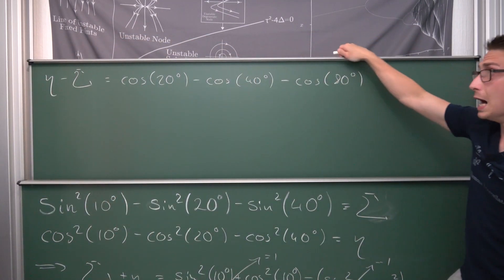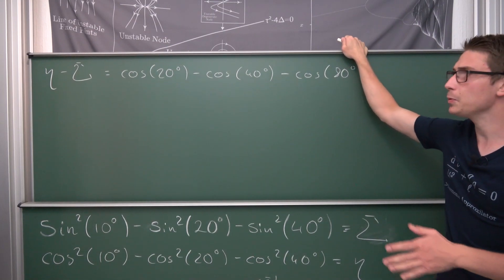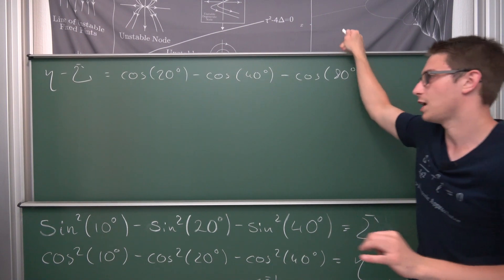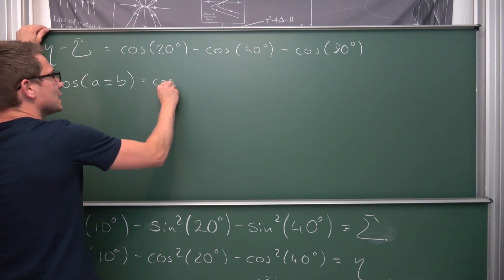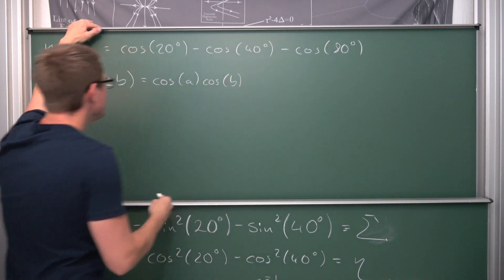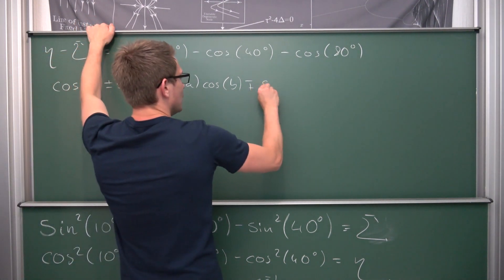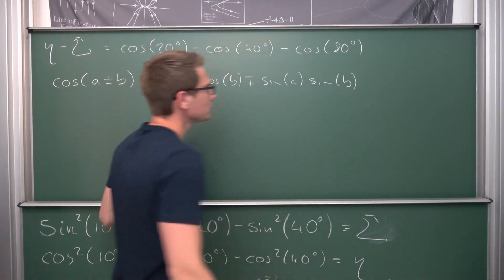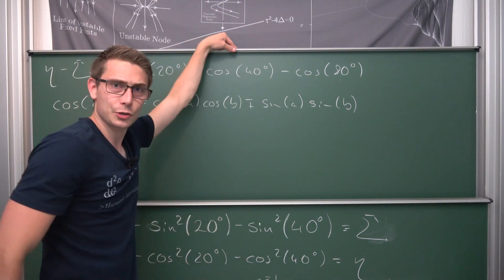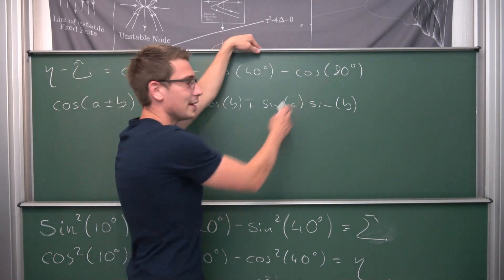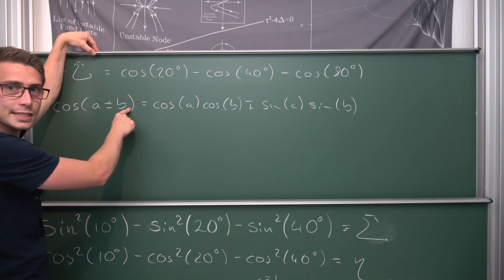Next we use the addition formula from the last video: cosine of a plus or minus b equals cosine a times cosine b, minus or plus sine a times sine b. Now cosine of 40 degrees and cosine of 80 degrees have something in common. Cosine of 40 degrees is the cosine of 60 minus 20, and cosine of 80 degrees is the cosine of 60 plus 20. So we have plus 20 degrees on one hand and negative 20 degrees on the other, and adding them up will cancel things out.